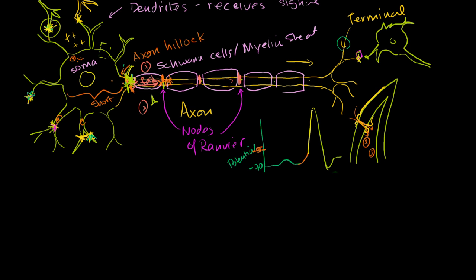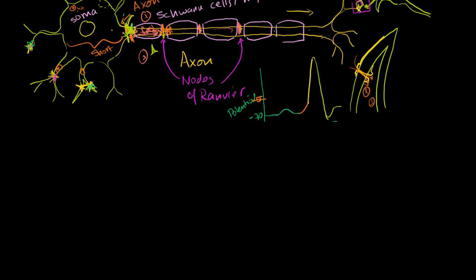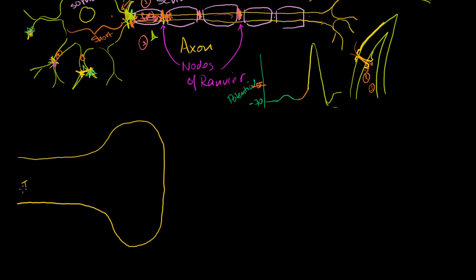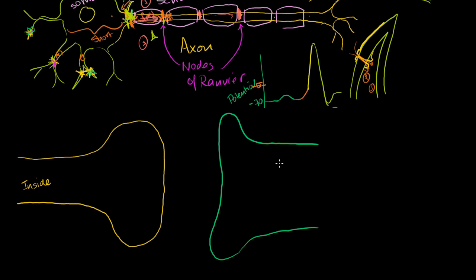Let's zoom in on this little box right here — the terminal end of this axon — and also zoom in on the dendrite of the next neuron. So the terminal end looks something like this — I've zoomed in big time. This is the terminal end of the neuron; this is the inside of the neuron. And then the dendrite of the next neuron is right here. So we've really zoomed in: this is the dendrite of the next neuron.